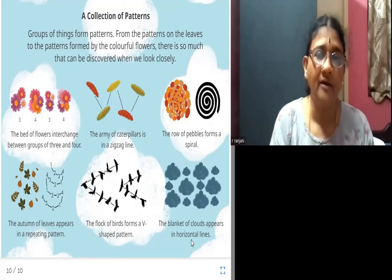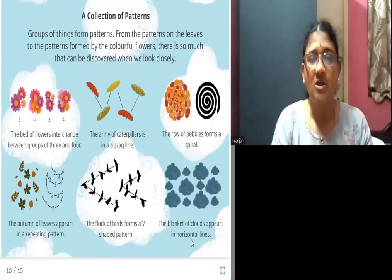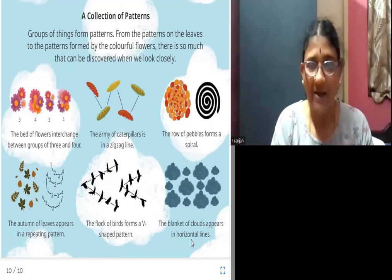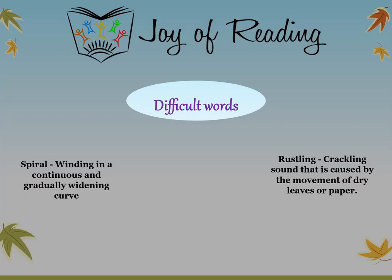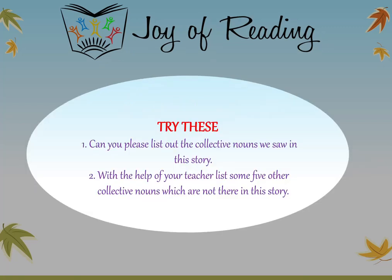Did you all learn about collective nouns in this story? Thank you. Difficult words: Spiral — winding in a continuous and gradually widening curve. Rustling — a crackling sound caused by the movement of dry leaves or paper. Try these: Can you list out all the collective nouns we saw in this story? Next, with the help of your teacher, list 5 other collective nouns not found in this story.